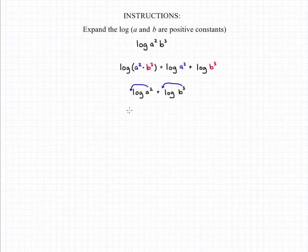So we can rewrite our currently expanded log as two times the log of a plus three times the log of b. And that will be our final answer, two log a plus three log b.